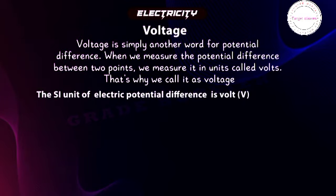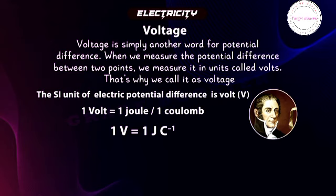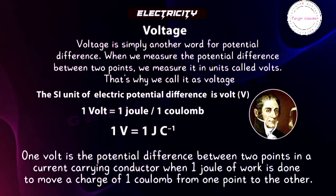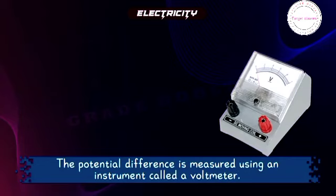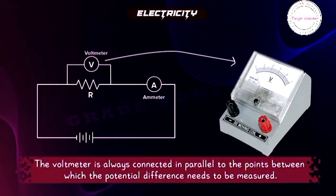The SI unit of electric potential difference is the volt (V), named after Italian physicist Alessandro Volta. One volt equals one joule per coulomb: 1V = 1 J/C. So one volt is the potential difference between two points in a current-carrying conductor when one joule of work is done to move a charge of one coulomb from one point to the other. The potential difference is measured using a voltmeter, which is always connected in parallel to the points being measured.